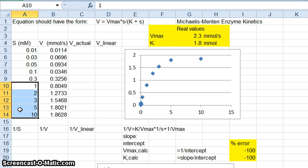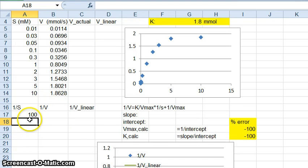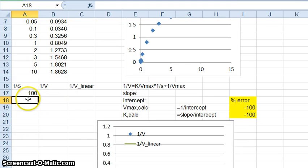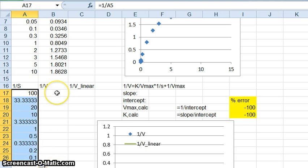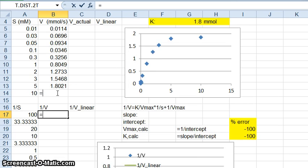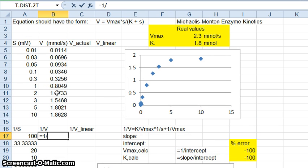Remember when we transformed the equation we transformed it into this form here where we have 1 over V as a function of 1 over capital S. What I'm going to do here is I'm going to say this one is equal to 1 over this guy here and then I'm going to fill that down. And this one is equal to 1 over this guy here and I'm going to fill that down.